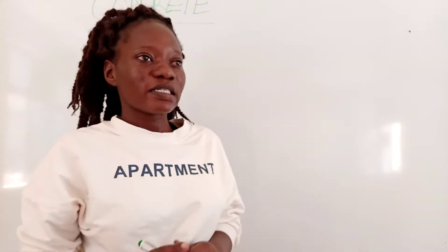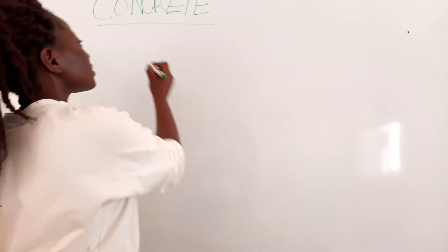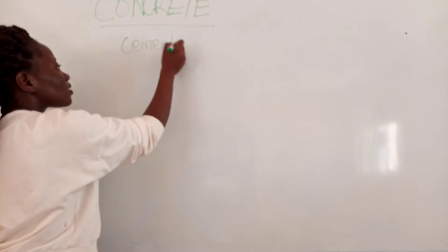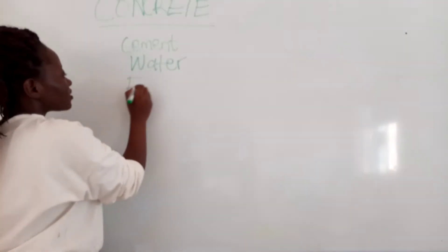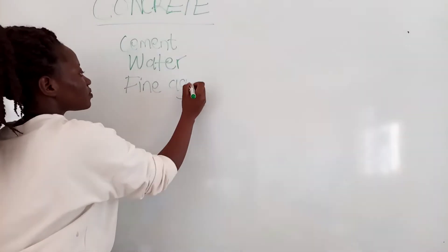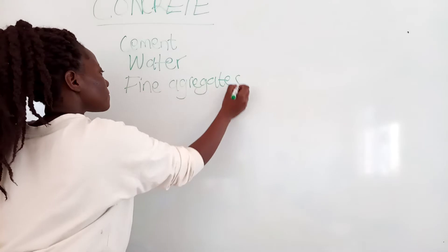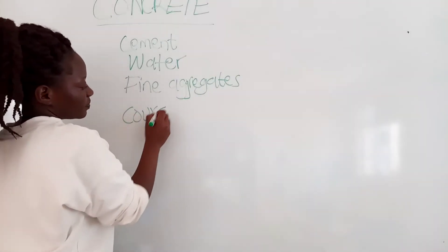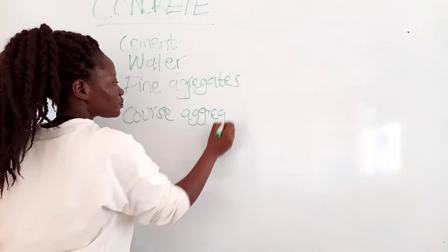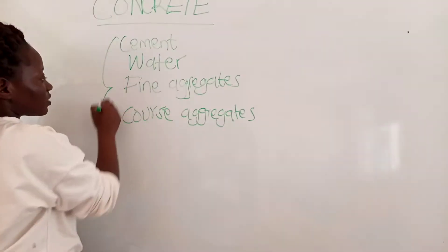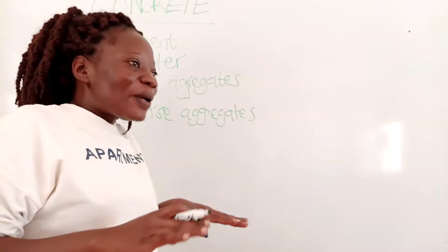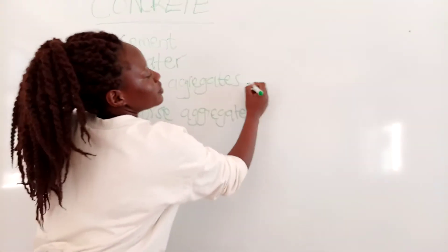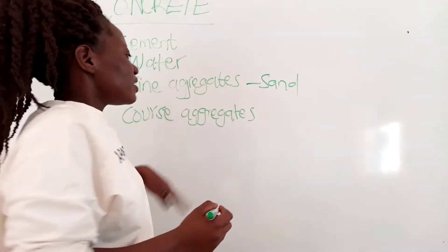So what is concrete? Maybe if somebody asks you what is concrete, what can you say? Concrete is a mixture of cement, water, fine aggregates, and coarse aggregates. So the mixture of all this is what we call concrete — a mixture of cement, water, and aggregates. In our local area we normally use sand as the fine aggregate, and coarse aggregates can be gravel or ballast.